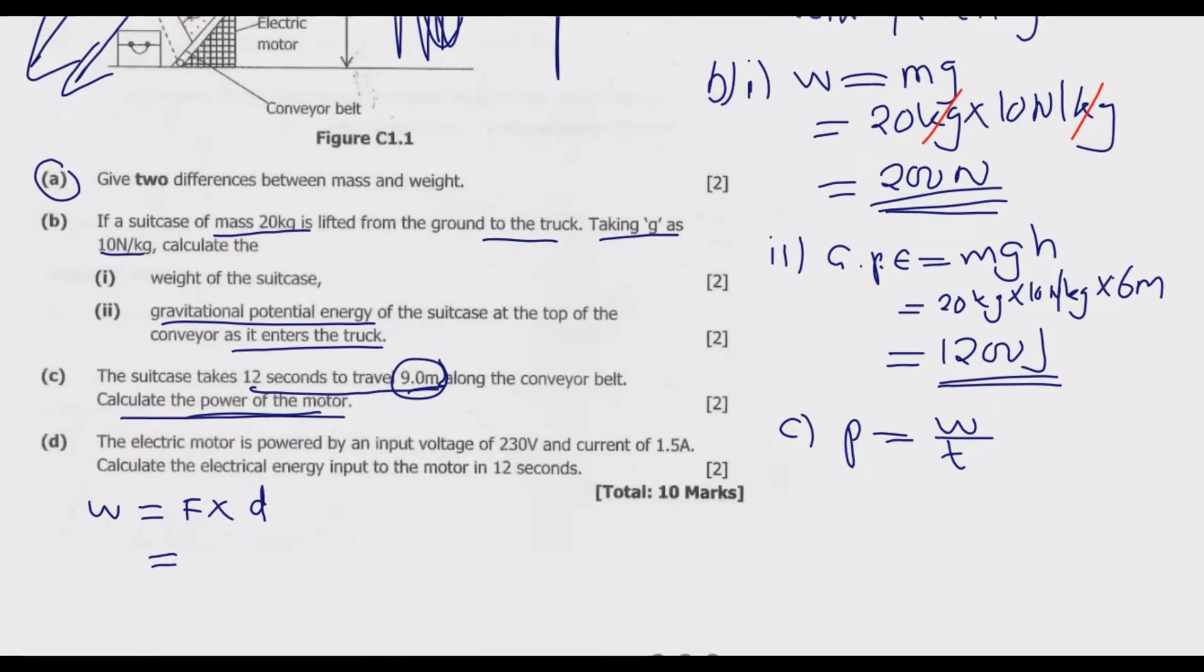Work done is 200 Newton multiplied by 9 meters, which equals 1,800 Joules. Then power equals work done divided by time: 1,800 divided by 12 seconds equals 150 watts. This is the power of the motor.